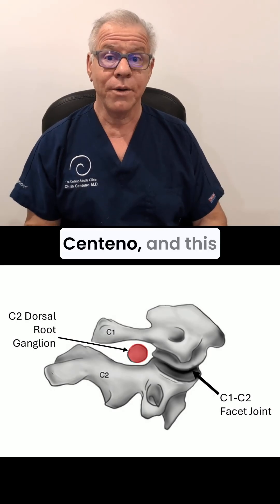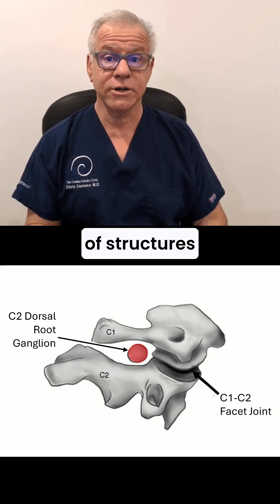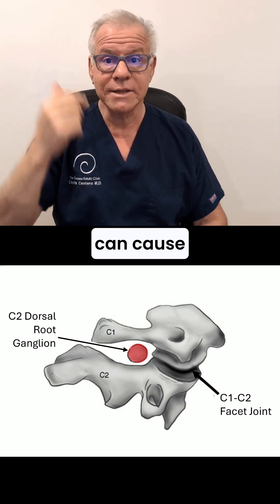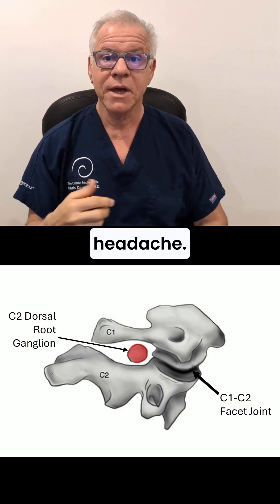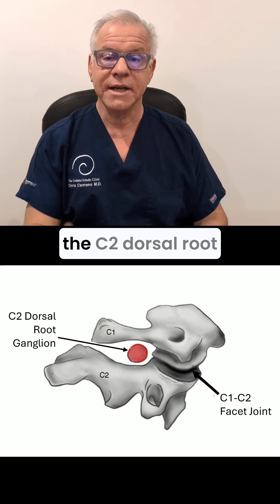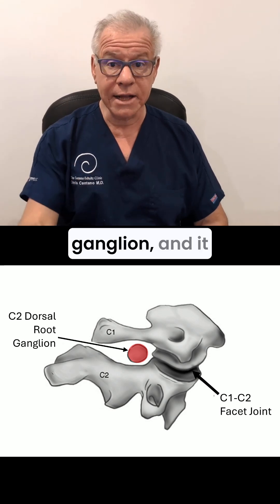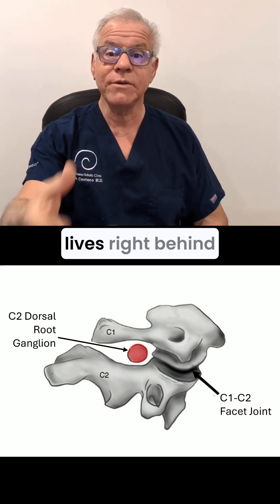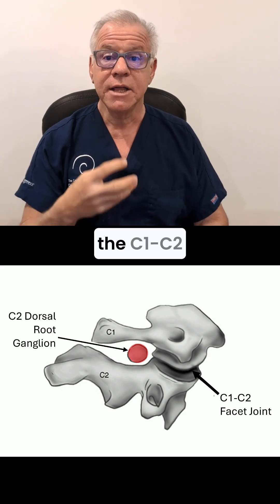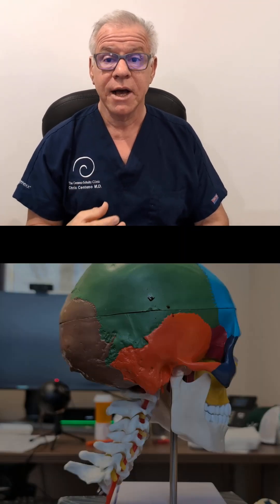Hi, it's Dr. Centeno, and this is part of my series of structures that live in your neck that can cause headache. Today, we're going to talk about the C2 dorsal root ganglion, and it lives right behind the C1-C2 facet joint.